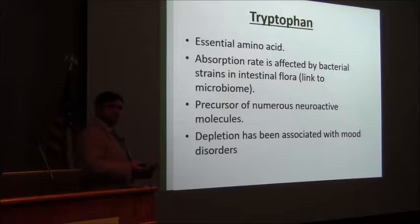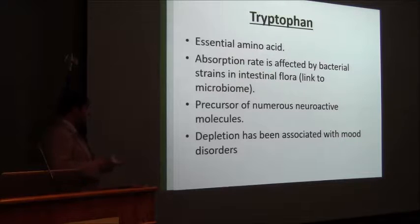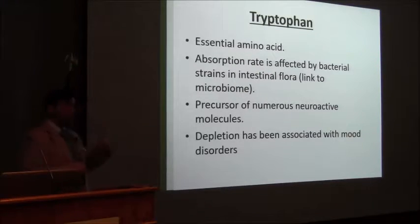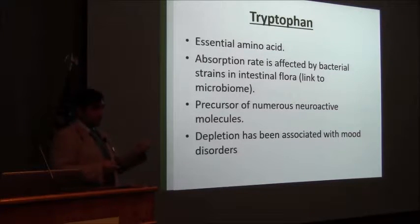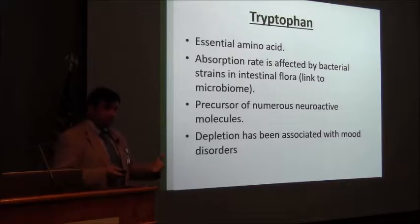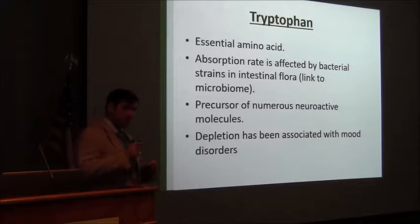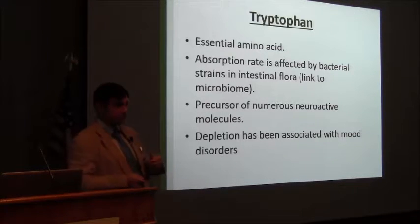Let's go back for one moment to tryptophan. What is tryptophan? Tryptophan is an essential amino acid, meaning we can only get it through food, through our diet. Therefore, the absorption rate is affected by our microbiome. Abnormalities in the microbiome have been described in patients with autism, as well as intestinal and digestive problems. Tryptophan is also a precursor of several neuroactive molecules — this is the link to neurodevelopment — and depletion of tryptophan, both acute and chronic, has been associated with mood disorders.